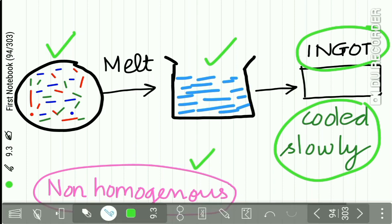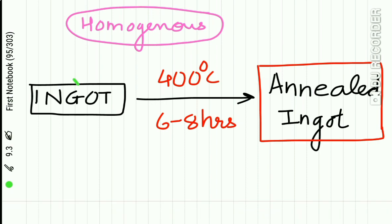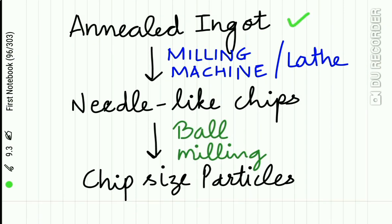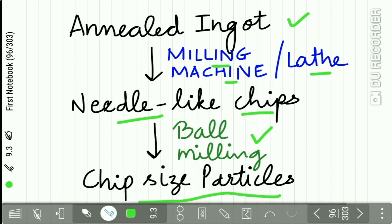Because of this disadvantage of non-homogeneous grains, the ingot is heated slowly up to 400 degrees Celsius for six to eight hours, which leads to the formation of an annealed ingot. This slow heating results in formation of more homogeneous grains. This annealed ingot is then subjected to a lathe machine to form needle-like chips. These needle-like chips are further processed by ball milling to form the chip-sized lathe cut particles.